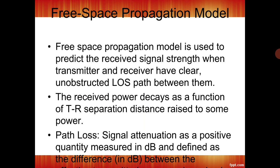The Free Space Propagation Model is the first model. The Free Space Propagation Model is used in predicting the received signal strength when the transmitter and receiver are in a straight line — that is called Line of Sight (LOS). The received signal power decays as a function of the transmitter-receiver separation distance raised to some power, and during that time some loss may occur — that is called Path Loss.